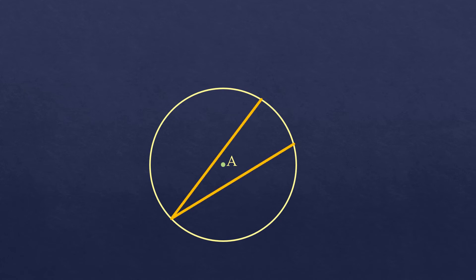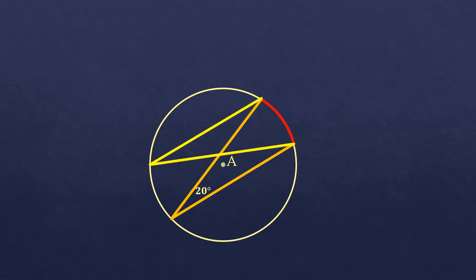So let's have another circle — circle A — with an inscribed angle, and we create an intercepted arc. Let's say the measure of this inscribed angle is 20 degrees. Now let's create another inscribed angle. The question is: what is the measure of this second inscribed angle, considering that they share the same intercepted arc? Their measures are actually the same — both are 20 degrees. As long as the inscribed angles have the same intercepted arc, they are congruent.